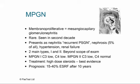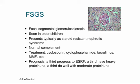Focal segmental glomerulosclerosis (FSGS), like MPGN, is primarily a disease of older children in the second decade. It typically presents as steroid-resistant nephrotic syndrome — if a nephrotic hasn't responded to a month of high-dose steroids, the likely diagnosis is FSGS. Complement is normal in FSGS. Treatment options include cyclosporine, cyclophosphamide, tacrolimus, and mycophenolate mofetil. Prognosis: a third progress to end-stage, a third have heavy ongoing proteinuria, and a third do reasonably well with moderate proteinuria only.